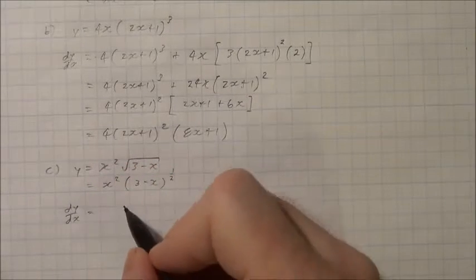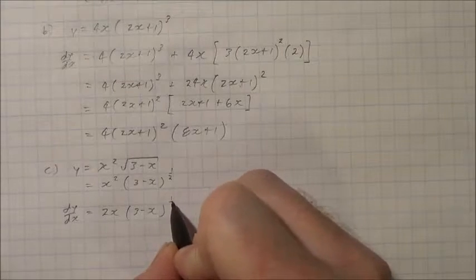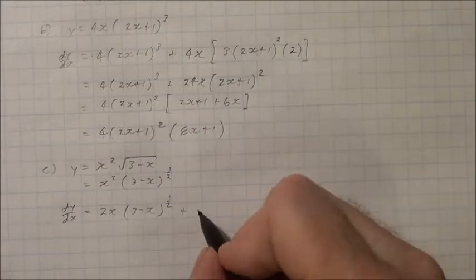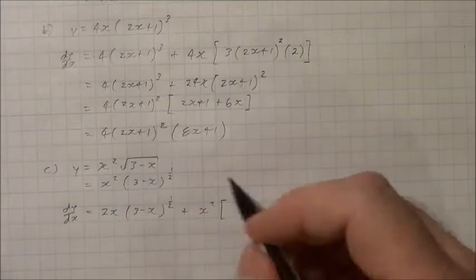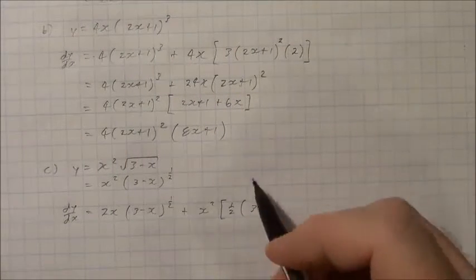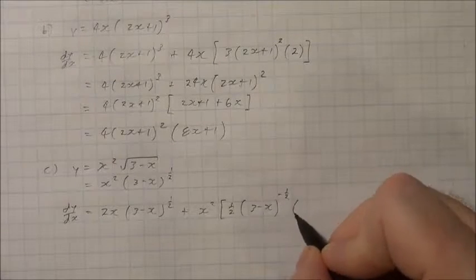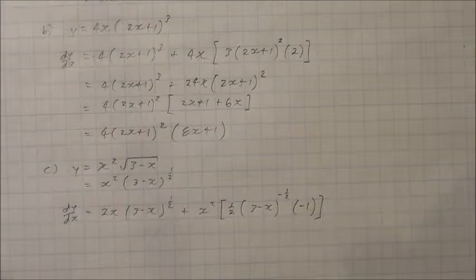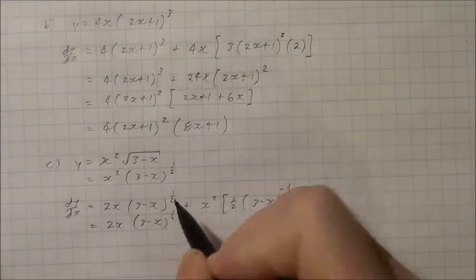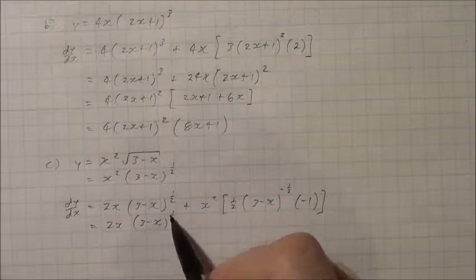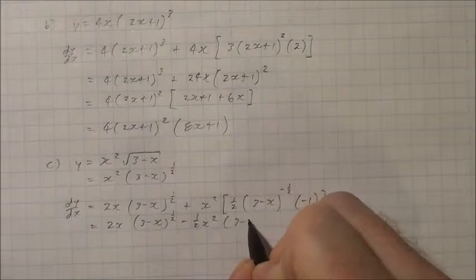Finding the gradient function dy by dx: I take the derivative of the first function, x squared, to get 2x, multiplied by the second function, 3 minus x to the one half. Then I add the first function multiplied by the derivative of the second: bring the one half down in front, leave the inside as it is, subtract 1 from one half to get negative one half, then take the derivative of the inside to get negative 1. Tidying up gives 2x times 3 minus x to the one half, minus one half times x squared times the quantity 3 minus x to the negative one half.